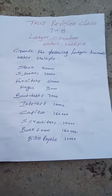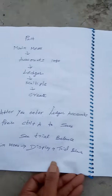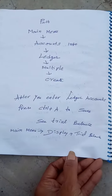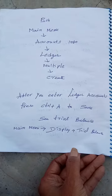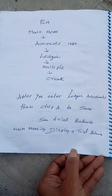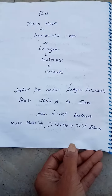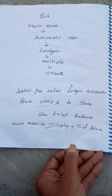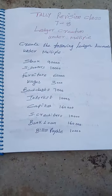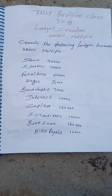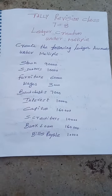Here we are going to create a path that we follow. You enter all the ledger accounts under specific groups. For example, stock under stock group, sundry debtors under current assets debtors group.